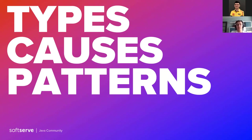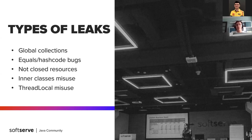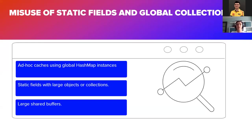The most common causes and patterns that can lead to a memory leak include: some sort of global state, collections especially maps, improper implementation of equals and hashCode methods, resources not being closed properly, non-static inner classes, and thread locals. Let's look at each type in detail, starting with the most common one: the misuse of static fields and global collections.